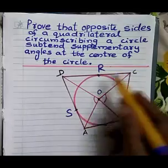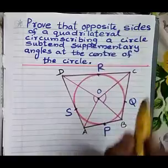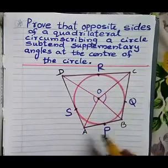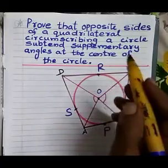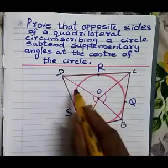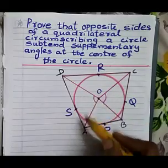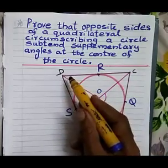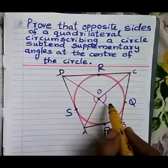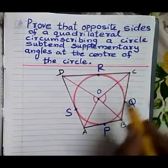Circle with centre O, quadrilateral ABCD, points of contact P, Q, R, and S. We need to prove that opposite sides of a quadrilateral subtend supplementary angles at the centre. Opposite sides of quadrilateral ABCD: one side AD and its opposite side BC; opposite side of AB is DC. The side AD subtends angle AOD at the centre, and its opposite side BC subtends angle BOC at the centre.